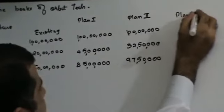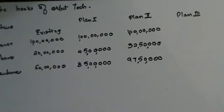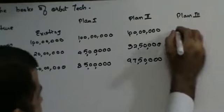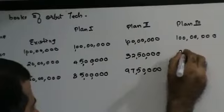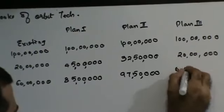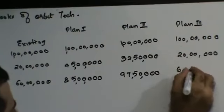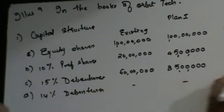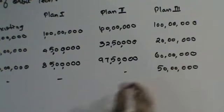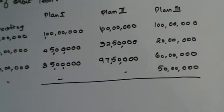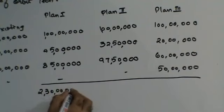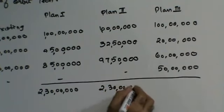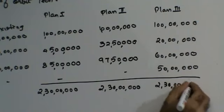Plan 3: issue new debentures carrying 14% interest. Equity share capital remains as it is, preference shares remain as it is, existing 10% debentures remain at 60 lakhs, and you issue new 14% debentures of 50 lakhs. You already had capital of 1 crore 80 lakhs plus another 50 lakhs, giving a total capital of 2 crore 30 lakhs.